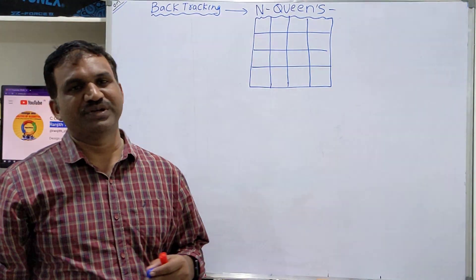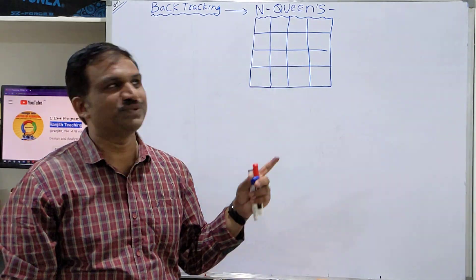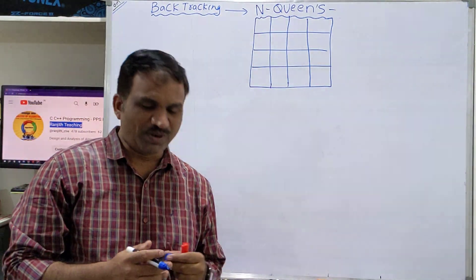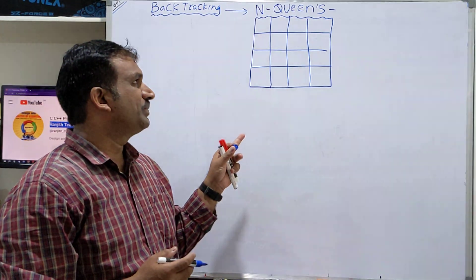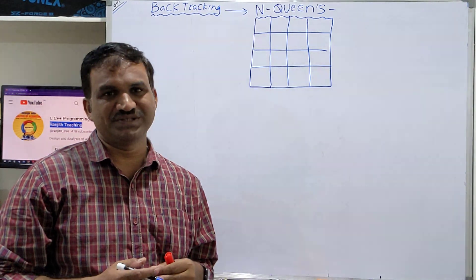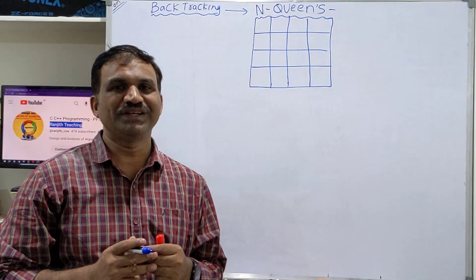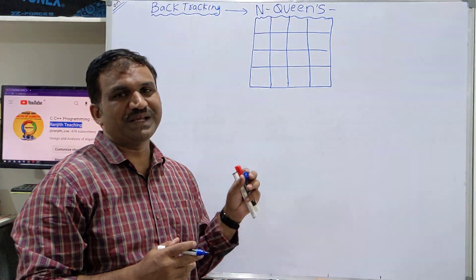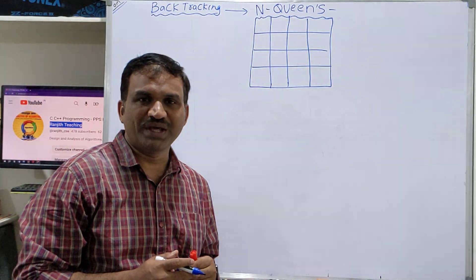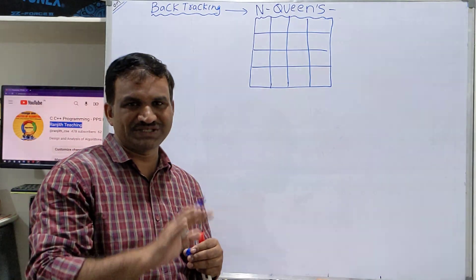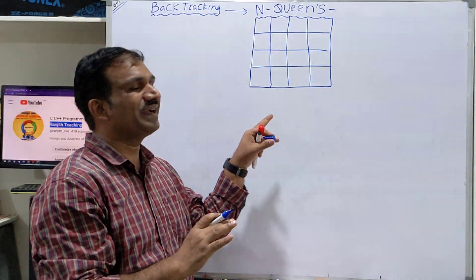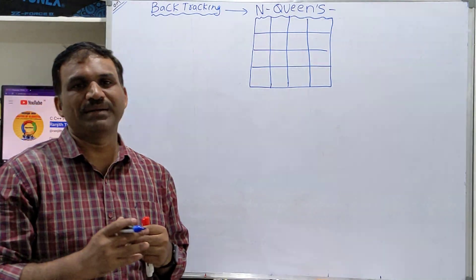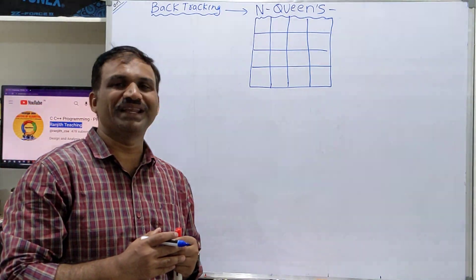Hello, let us discuss the N-Queens problem using the backtracking technique. The problem is about placing N queens on an N×N board so that no queen attacks another. For example, with a 4×4 board, we want to place 4 queens such that no queen attacks another. Let us demonstrate with an example and also write an algorithm.